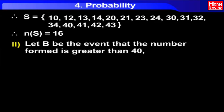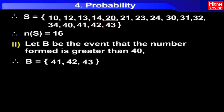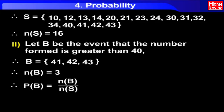Number two: let B be the event that the number formed is greater than 40. Therefore, B = {41, 42, 43}. Therefore, N(B) = 3. Therefore, P(B) = N(B) / N(S) = 3/16.